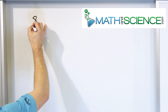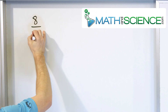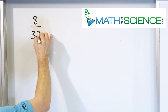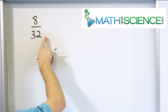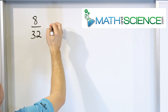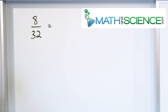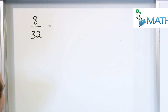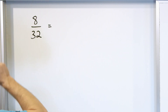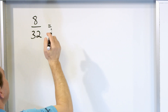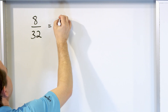These fractions are going to have slightly larger numbers, so we won't be able to use the magnets, but that's okay because we know what we're doing now. Here we have 8/32. We're going to do this one two ways. The first way is we're going to recognize that this is an even number and this is an even number, so we know that we can divide by two.